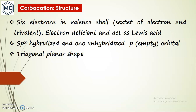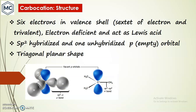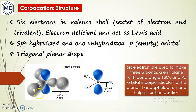Regarding hybridization: methane (CH4) has a complete octet and is sp3 hybridized with four hybrid orbitals. With only six electrons, the hybridization becomes sp2, having three hybridized orbitals — one s and two p — and one unhybridized empty p orbital. The shape is trigonal planar, with all three C-H bonds in the same plane, bond angles of 120°, and the empty pz orbital perpendicular to the plane, available to accept electrons in further reactions.